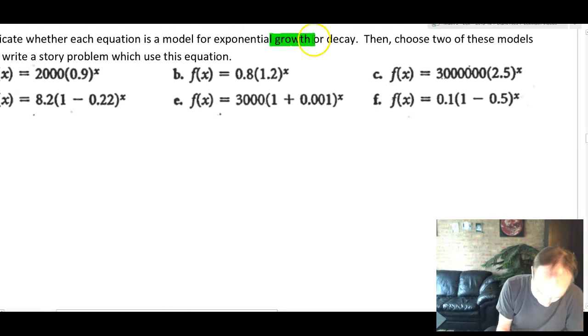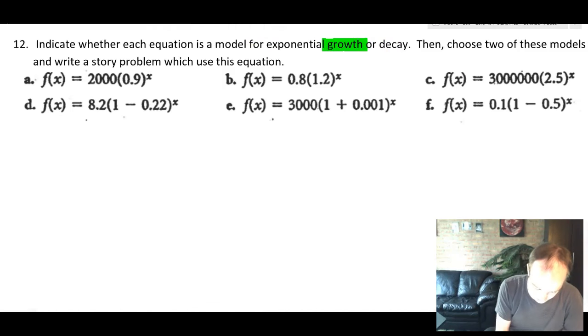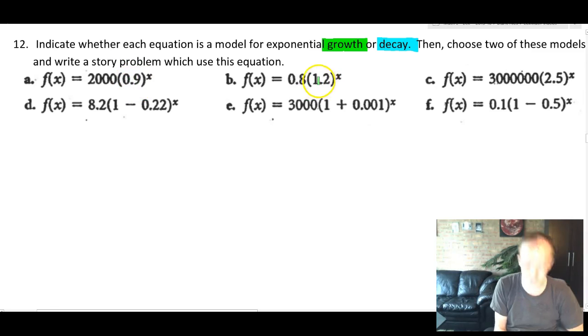So let's call growth green, and decay is something that goes down. Let's call that blue. So everything that's growth, when we look for growth, we're going to be looking at the number in here and trying to decide whether that number will make the function increase as x gets larger. Here's something that will generate growth because this is greater than 1. 1.2 is greater than 1. So that's going to generate growth.